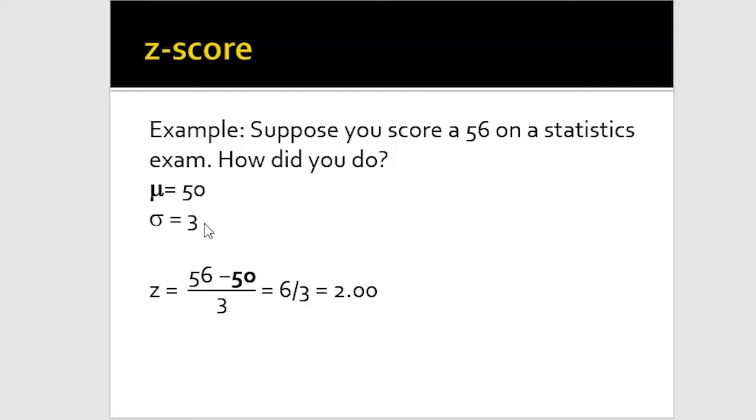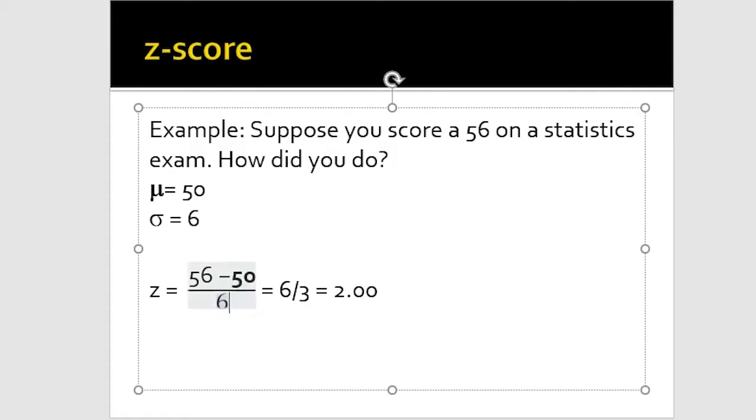Let's go through another example. Let's see what happens if we suddenly have a larger standard deviation, there's more spread in the scores. If we changed our standard deviation to 6, you'll notice it certainly reduces our z-score. Now we have a z-score of 1 in this particular case. So we didn't do quite as well on this exam compared to everyone else when there's more spread within the distribution.